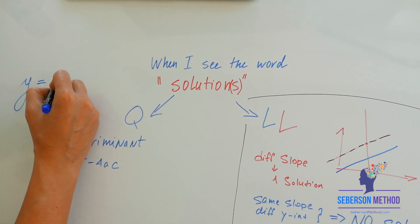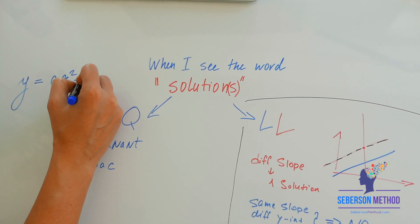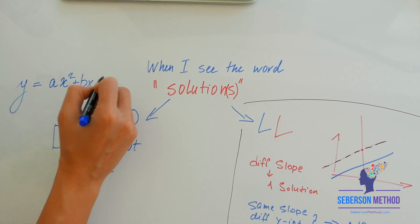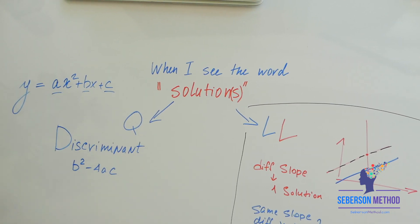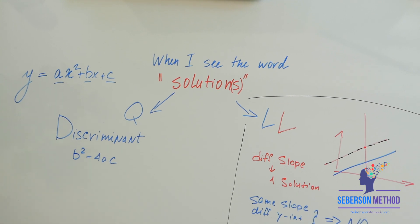It looks like this: y equals ax squared plus bx plus c. You're going to get your b, your c, and your a from your standard form. You're going to calculate your discriminant.